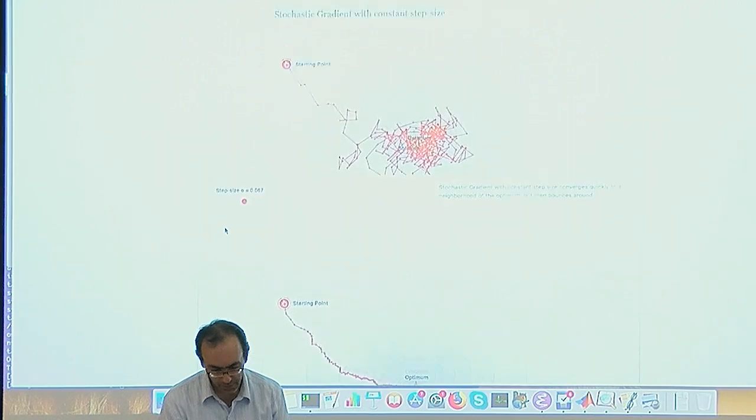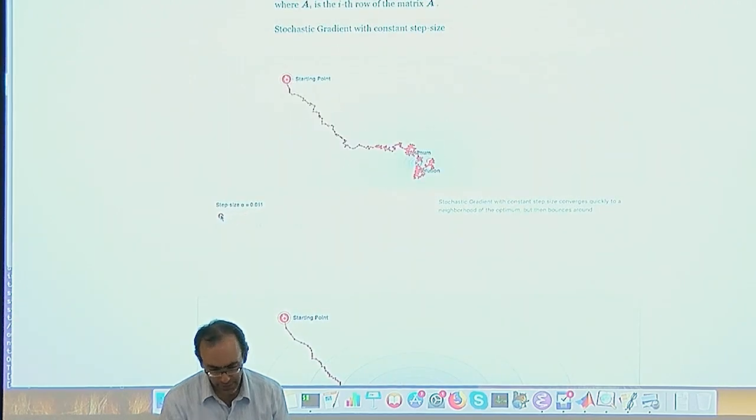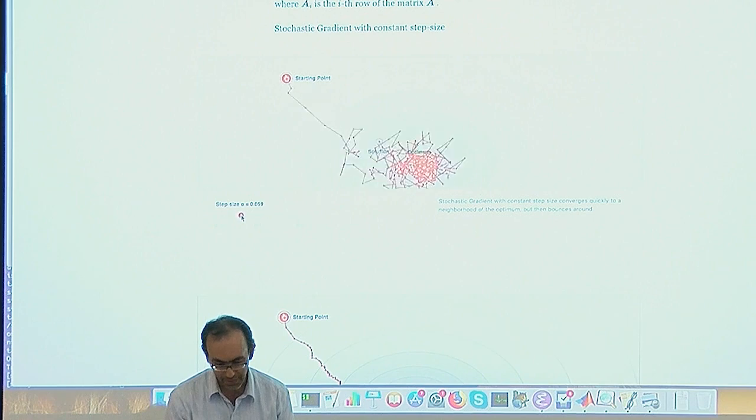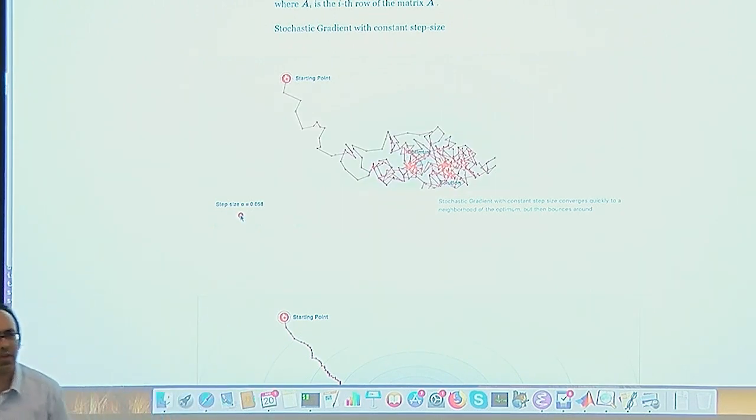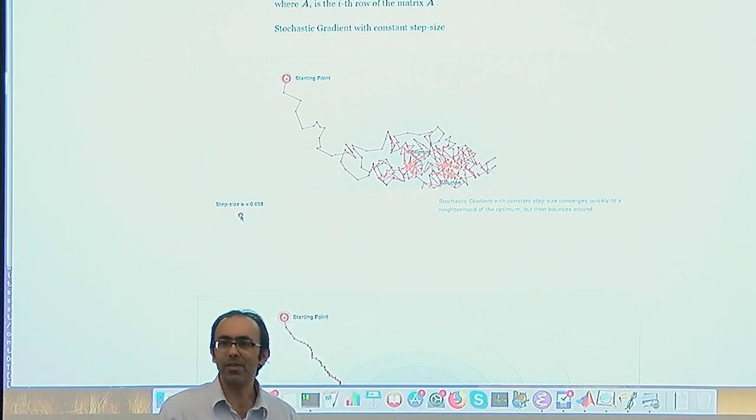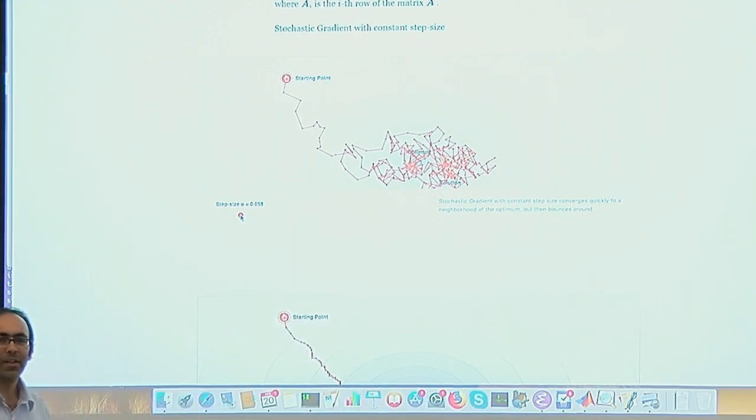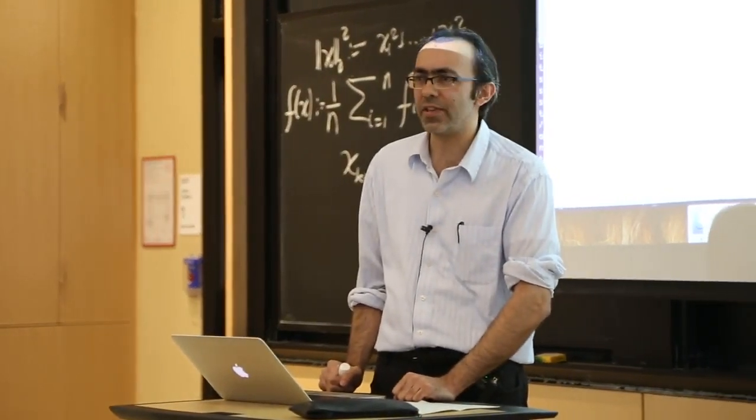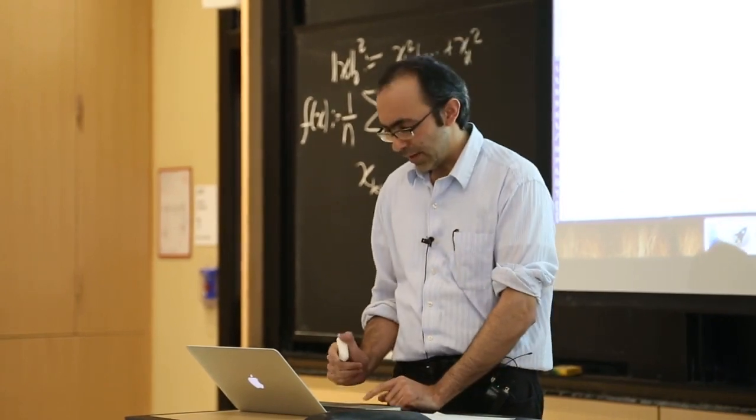Keep looking at what patterns you may notice in how the line is fluctuating. This slider I'm shifting is the step size. We are running xk plus 1 equals xk minus some eta k times some randomly chosen data point. As I vary the step size, see if you can notice some patterns.